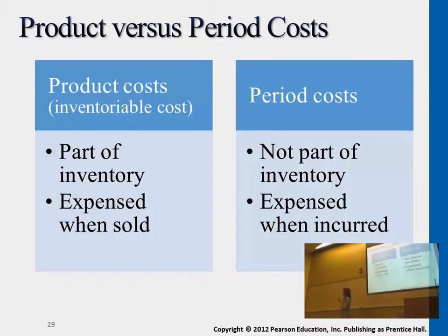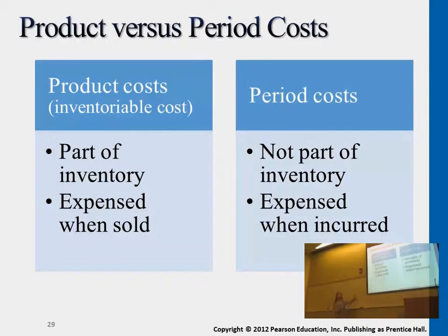So we're trying to calculate cost of goods sold expense, which is after the fact of selling the items to customers. Don't get confused — the first step when we purchase inventory, it is an asset account, and then we sell to the customer and it turns into cost of goods sold expense.